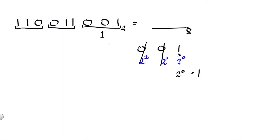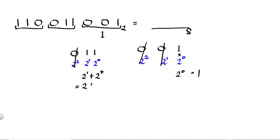Next group, 011 — the positional values are two raised to zero, two raised to one, and two raised to two. Since the leading digit is zero, we cancel it. 1 × 2¹ = 2, plus 1 × 2⁰ = 1. So the answer is 3. 011 binary is equivalent to 3 octal.